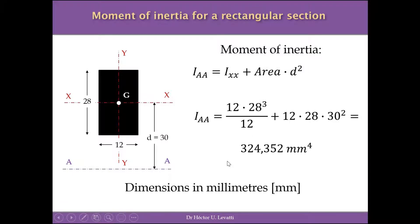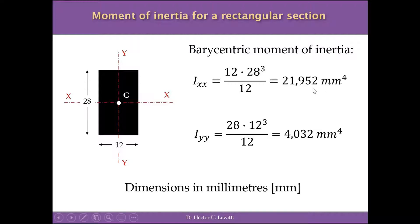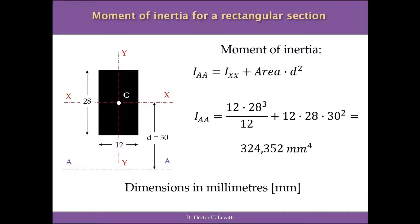Applying this to our example: the barycentric moment of inertia is 12 × 28³ / 12, plus the area (12 × 28) multiplied by 30² mm², giving 324,352 mm⁴. As you can see, when the distance to the axis increases, the moment of inertia increases considerably — from around 21,000 and 4,000 mm⁴ for the barycentric axes, up to 324,000 mm⁴ for an axis 30 mm from the centroid, an increase of roughly one order of magnitude.